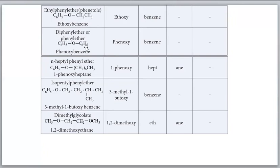For diphenyl ether: both groups are phenyl (benzene rings), so the IUPAC name is phenoxybenzene. For the compound with a benzene ring and a seven-carbon chain: the seven-carbon chain is larger, benzene (phenoxy) is smaller. The phenoxy is at one end of the chain, so the name is 1-phenoxyheptane.